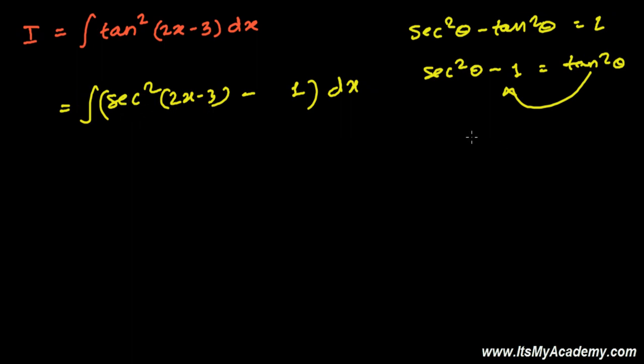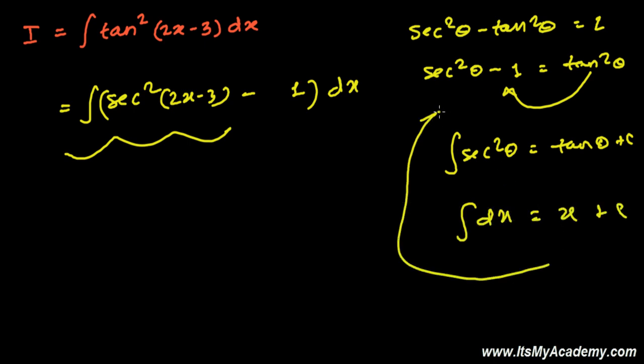Now what I can do, I have the direct formula of sec square theta. You know we have the integration, direct formula sec square theta is tan theta plus constant. So we have no problem for this particular guy, and integration of 1 dx is simply x. Integration of nothing dx is x plus some constant, so we solve both of them.